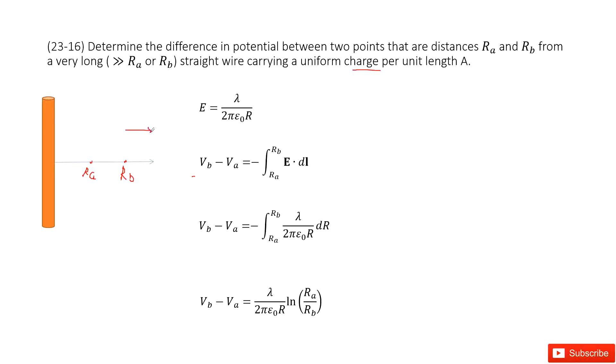As we talked about, E points radially outward, and DL also points outward. So the two-vector dot operation just writes as lambda divided by 2 pi epsilon r dr. Then we do this integral and get the final answer there. Thank you.